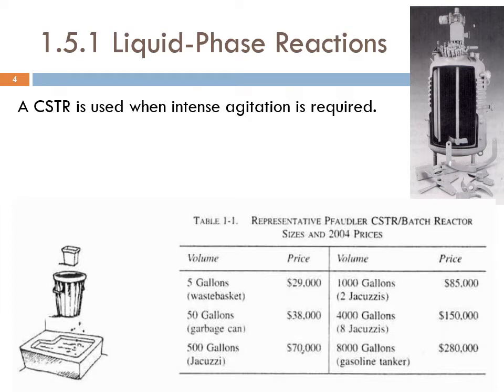One advantage of the CSTR is that it enables really intense agitation and intense mixing. Therefore, a CSTR is used when intense agitation is required. In the textbook there is a table showing the cost of a CSTR or batch reactor depending on their sizes.